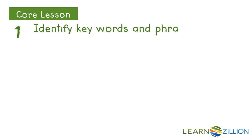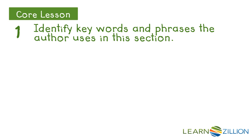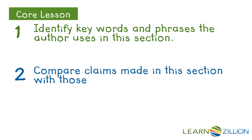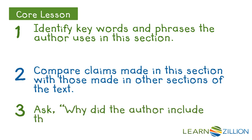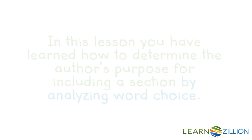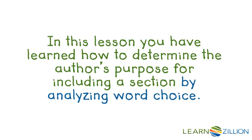In this lesson, we followed three steps to determine author's purpose. First, we identified keywords and phrases the author uses in the section. Second, we compared the claim made in this section to those made in the entire text. And third, we asked, why did the author include this section? In this lesson, you have learned how to determine the author's purpose for including a section by analyzing word choice.